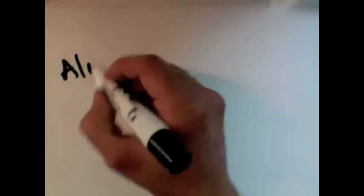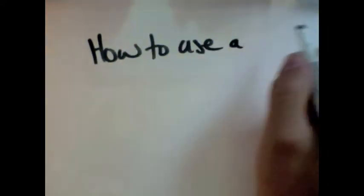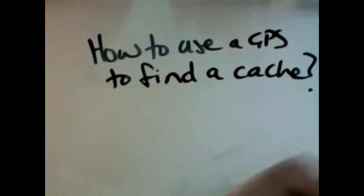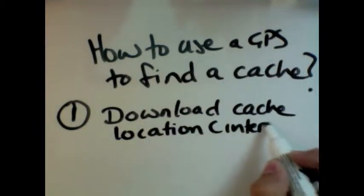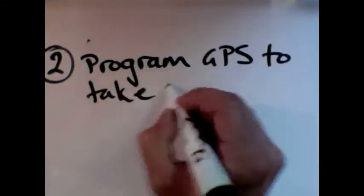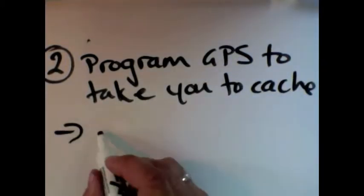So it's best to avoid them or best to just be very cautious when you're out there. Now, how do you use the GPS receiver to find a cache? The first thing you need to do is download the cache locations—these are found on the internet. The second thing you need to do is program your GPS receiver to take you to that cache.